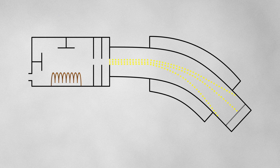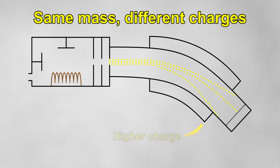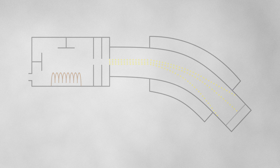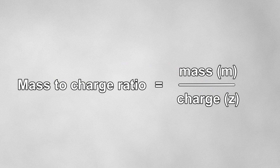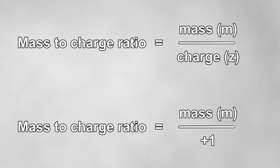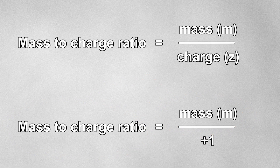Mass isn't the only thing that influences the path of the ions — charge is also a factor. If the cations have the same mass, the ones with higher charges will bend too much and the ones with lower charges won't bend enough. So the identity of the cations hitting the detector is related to the mass to charge ratio. However, conveniently, the majority of cations that form will have a single positive charge, so their mass to charge ratio will be the same as their mass. For the rest of the video, all cations mentioned will have a single positive charge.